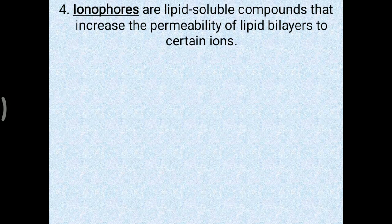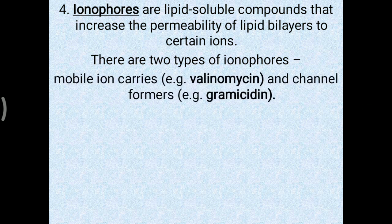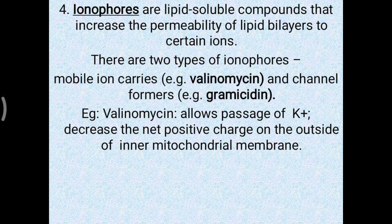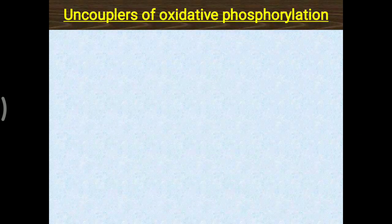Ionophores are lipid-soluble compounds that increase the permeability of the lipid bilayer to certain ions, particularly of the inner mitochondrial membrane. There are two types: mobile ion carriers, such as valinomycin, and channel formers, such as gramicidin. Valinomycin allows passage of potassium ions, decreasing the net positive charge on the outside of the inner mitochondrial membrane, which disperses the proton motive force and inhibits ATP synthesis.